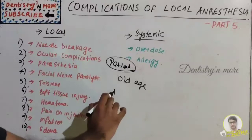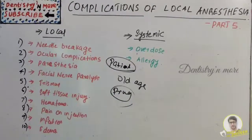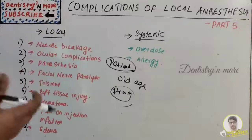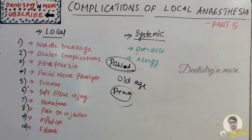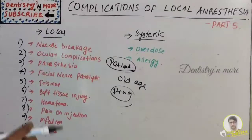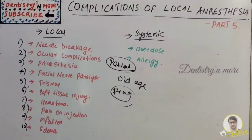Drug factors include vasoactivity — vasodilating properties of local anesthetics lead to shorter duration of clinical anesthesia and increased blood levels; lower concentration and smallest effective dose should be given. Route of administration — careful attention must be paid to avoid intravascular injection. Rate of injection should be slow. Vasoconstrictors decrease absorption of the drug; without a vasoconstrictor there will be rapid uptake. Prevention includes using an aspiration syringe, using a needle no smaller than 25 gauge, aspirating in at least two planes before injection, and always injecting slowly.